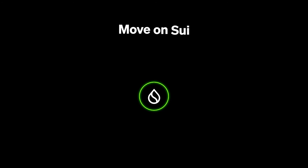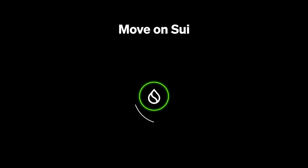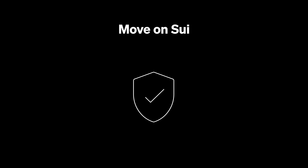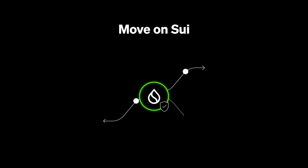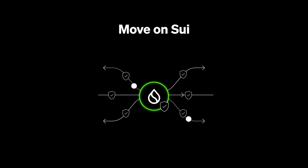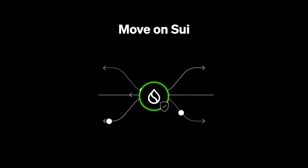MOVE is a new smart contract language developed by Sam Blackshear, co-founder of SUI. It offers a safer, more secure, and easier way for developers to write smart contracts. These safety guarantees make crypto safer for users. For example, many of the common attack vectors of EVM smart contracts are impossible on SUI. MOVE on SUI is different from other forms of MOVE as it has been adapted to SUI's object-oriented data model, while including a handful of unique tools that improve both the user and developer experience.